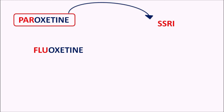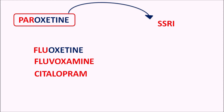We still have other drugs with different suffixes, such as fluvoxamine, citalopram — which has its S-isomer as escitalopram — and similarly sertraline. All these are Selective Serotonin Reuptake Inhibitors.